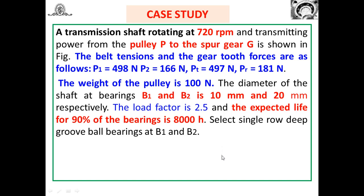We need to select single deep groove ball bearings at positions B1 and B2. Shaft diameters are given: 10 mm at B1 and 20 mm at B2. If shaft diameters are not given, we would first need to carry out stress analysis to determine them. Since they are provided here, we can proceed directly.